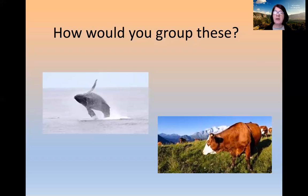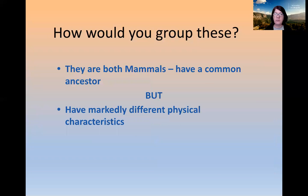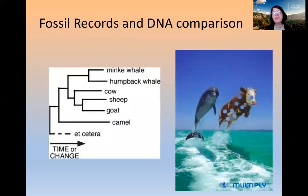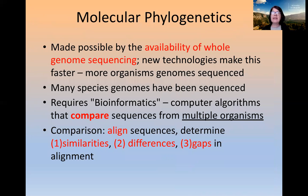Here is one of my favorite examples of how trees have been revised based on molecular data. How would you group a whale and a cow? They're both mammals — we know whales are not fish. Based on fossil records and mostly on DNA comparison, we now know that whales are actually closely related to cows, sheep, goats, and hippos — four-legged animals — because an ancestor of whales used to live on land and have four legs. Molecular phylogenetics is a new branch that has exploded in the past 50 years thanks to the availability of whole genome sequencing.